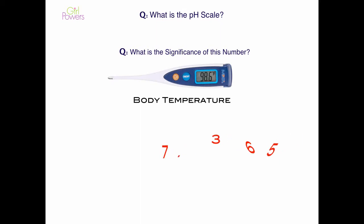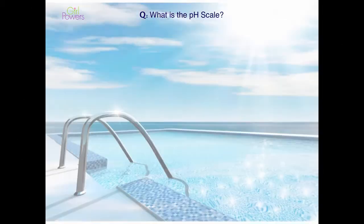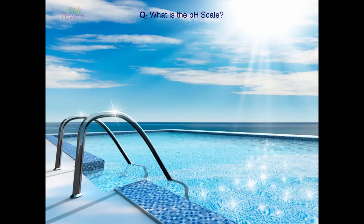There's another number in your body that your body is constantly adjusting for, and that's 7.365 — the pH of your blood. Just like a pool maintains a healthy state for people to swim in because the water is kept at a very specific pH, that's what's happening in your blood as well.